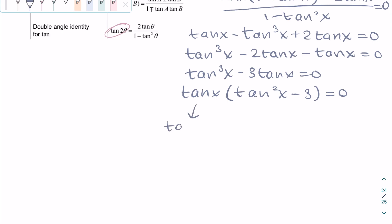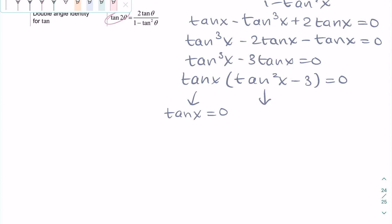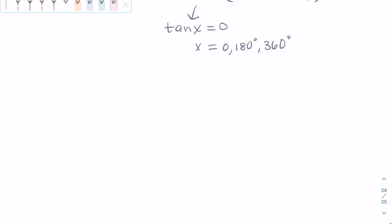We can start with tan x. Tan x equals 0 at 0 degrees, 180 degrees and 360 degrees. However, we need to keep in mind that 360 is not part of the domain, so we exclude that.